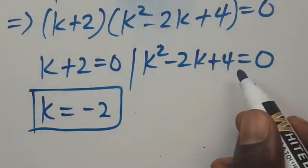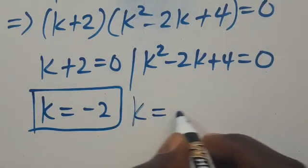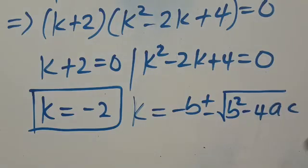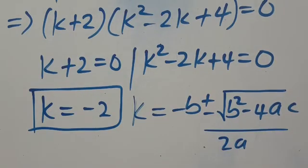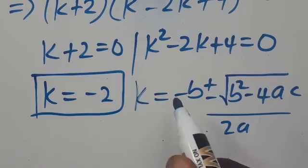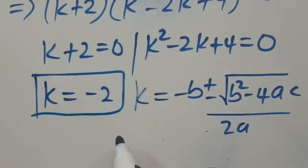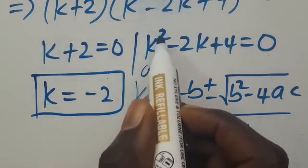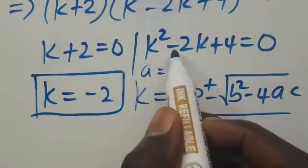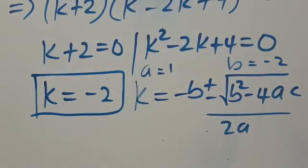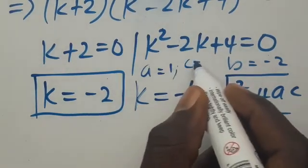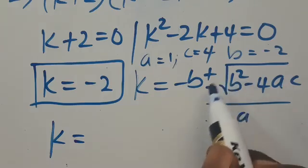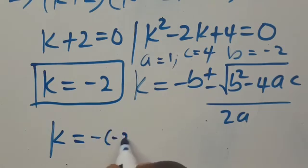Now from the quadratic k squared minus 2k plus 4, we can apply the quadratic formula: k equals minus b, plus or minus the square root of b squared minus 4ac, all divided by 2a. Our a equals the coefficient of k squared which is 1, our b equals the coefficient of k which is minus 2, and our c equals the constant which is 4.